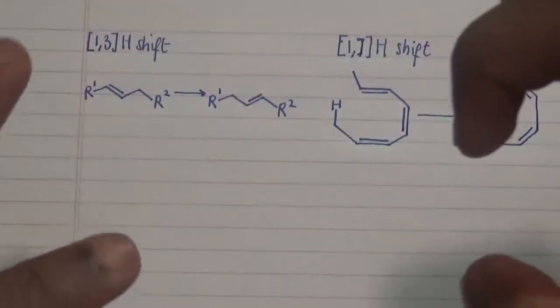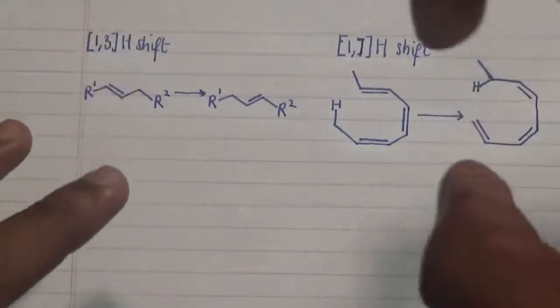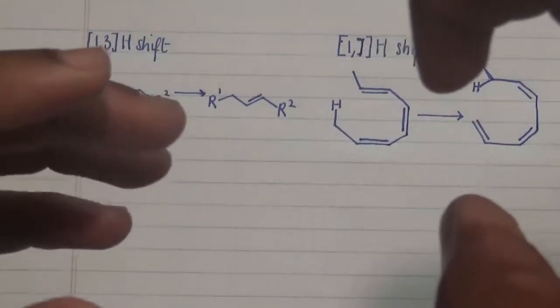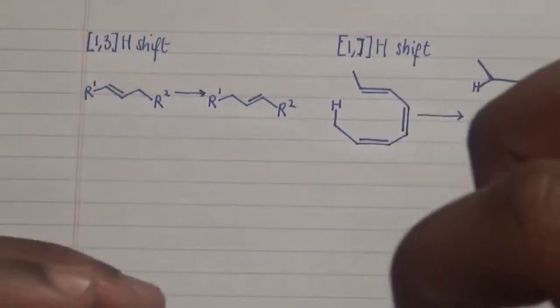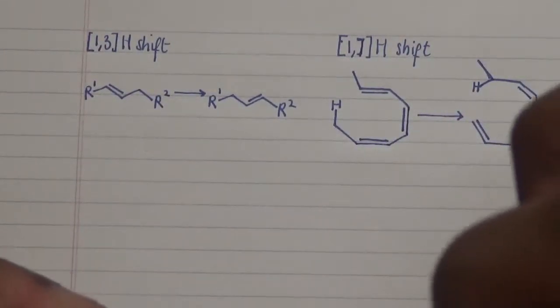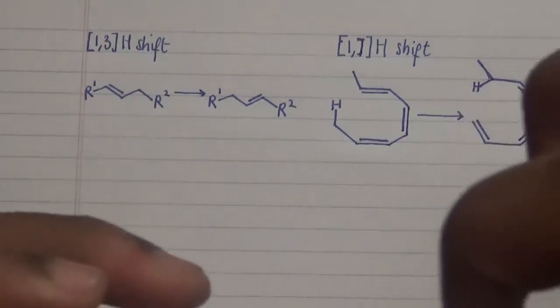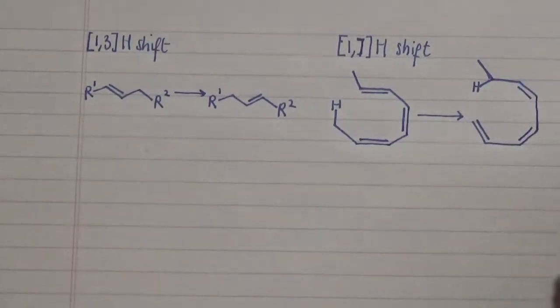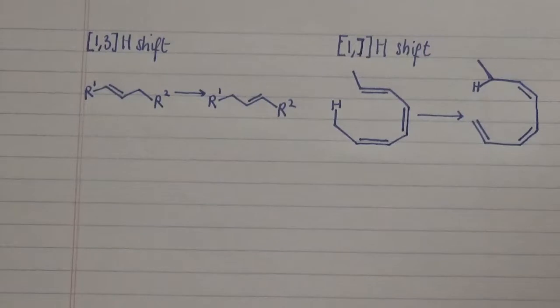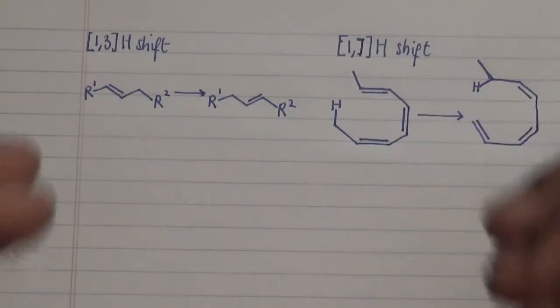We saw an sp3 carbon to an sp2 carbon. Now that sp2 carbon transforms its hybridization into an sp3 carbon in that particular reaction, going from carbon 1 to carbon 5. This is quite an interesting one because that process was actually done in a superficial migration process.